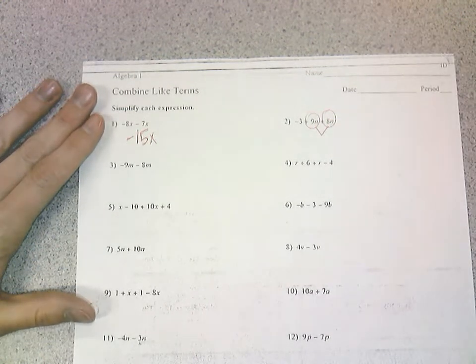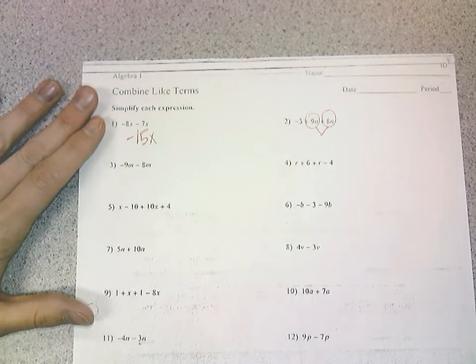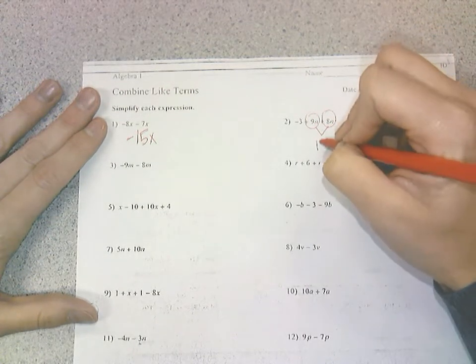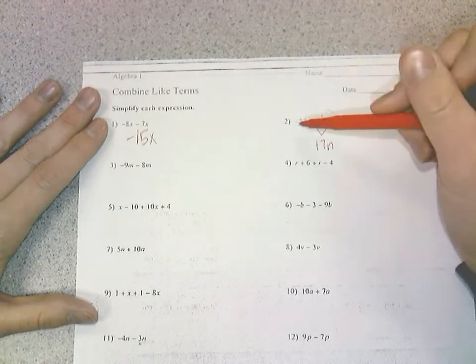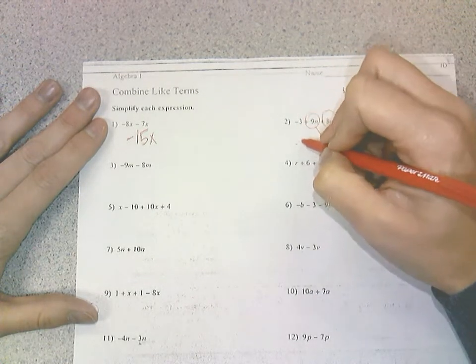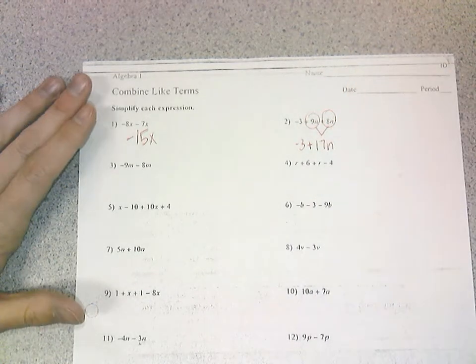The only things that you can combine are the like terms, which would be this 9n and this 8n. So if we add them together, if I have 9 n's and 8 more, then we have 17 n's, then this cute little 3 just gets brought down. We're not going to do anything with that, because it is not a like term.